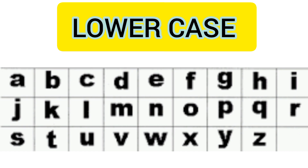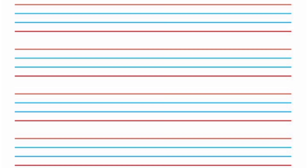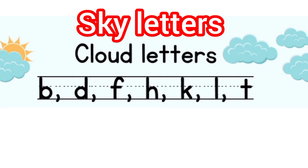Small letters are also divided into three categories by writing: sky letters, grass letters, and root letters. In an English notebook we have 4 lines, and sky letters are written on the upper 3 lines. There are 7 sky letters in small alphabets — for example: b, d, f, h, k, l, t. They are also called cloud letters.